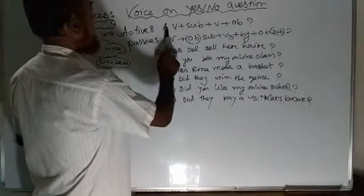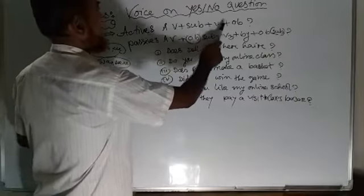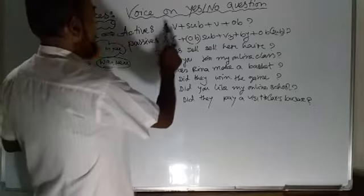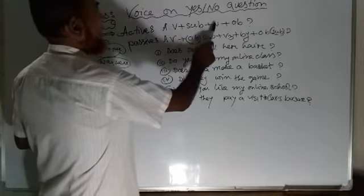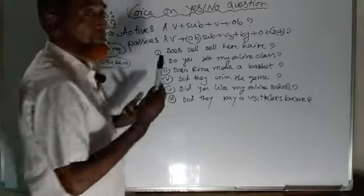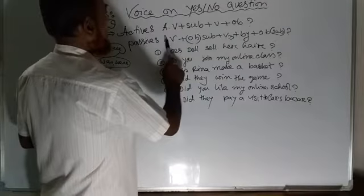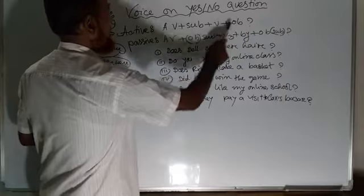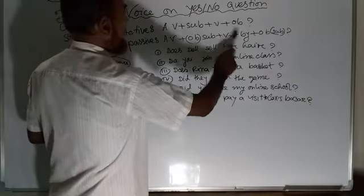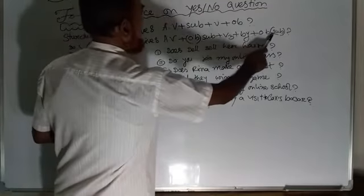Active: subject plus verb plus object. At the time of making passive voice, the object of the active sentence becomes the subject, followed by the past participle, then the preposition 'by', and the subject turns into objective case.